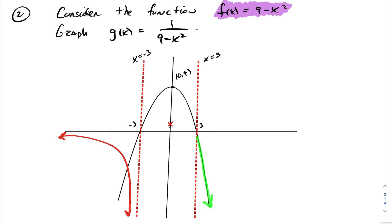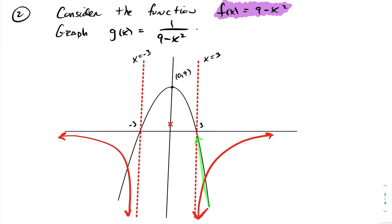On the right-hand side of the graph, the function is decreasing, so the reciprocal function will be increasing. As f(x) tends towards negative infinity, the reciprocal function tends towards 0 from below. As the function approaches 3 from the right, it approaches 0 from below, so the reciprocal function tends towards negative infinity. In the middle section, the original function is increasing, so the reciprocal is decreasing until the y-intercept, then increasing as f(x) decreases.